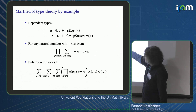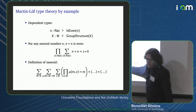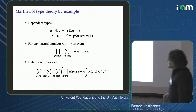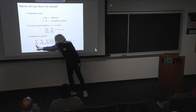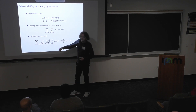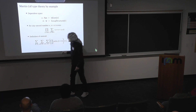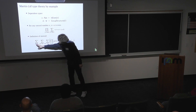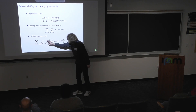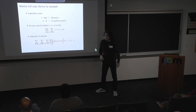And it would look like this. Here I have the definition of a monoid as an algebraic structure: a monoid consists of a type M — the sigma means building tuples, building iterated pairs — a carrier M which is a type, a multiplication, a unit element, and some axioms.